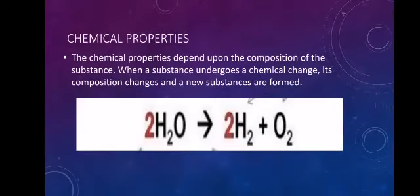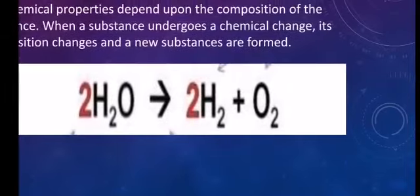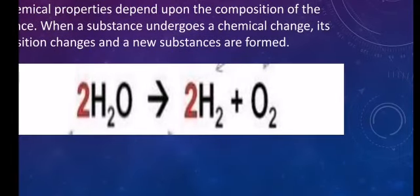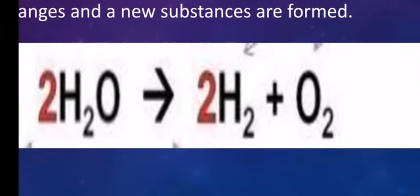Chemical properties depend upon the composition of the substance. When a substance undergoes a chemical change, its composition changes and new substances are formed. For example, the decomposition of water is a chemical change and produces hydrogen gas and oxygen gas. The decomposition of water molecule, H2O, converts into hydrogen gas and oxygen gas.